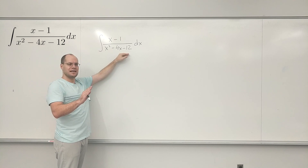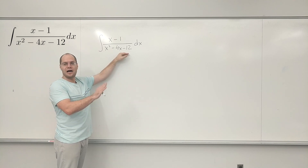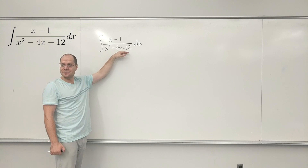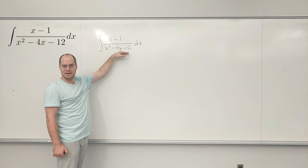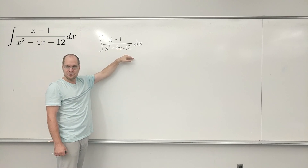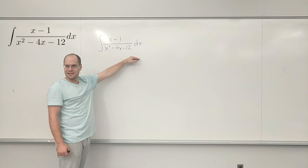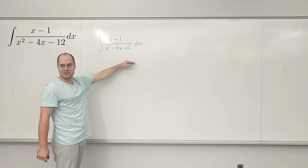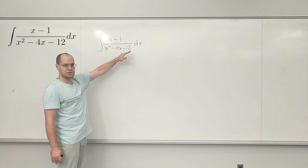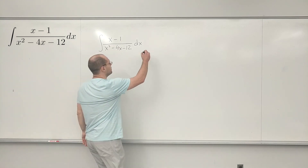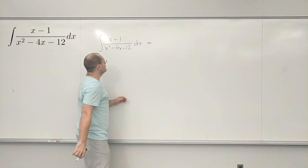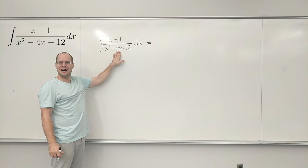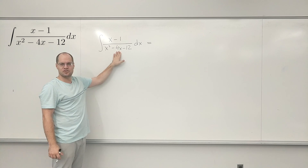I won't review factoring right now — I'll assume that you can look at the quadratic polynomial in the denominator and be able to factor it. I'll be happy to review this later; I just don't want to take us off track. So assuming you can factor this polynomial, you'll end up with x minus 6 times x plus 2.